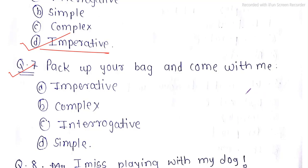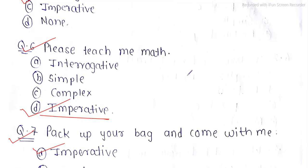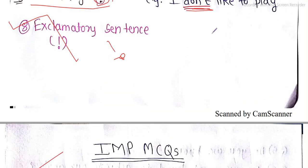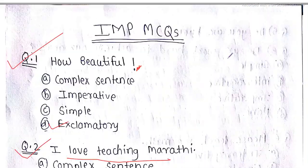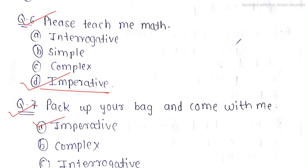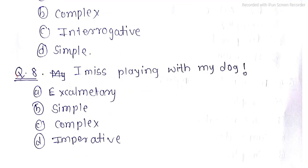Question 7: 'Pack up your bag and come with me.' — this is clearly a command, so this is an imperative sentence. Remember, imperative sentences include commands, advice, and requests. Question 8: 'I miss playing with my dog!' — there is an exclamatory mark plus emotion, so this is an exclamatory sentence.